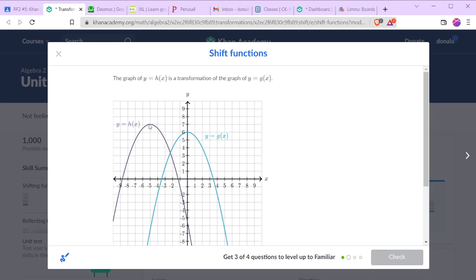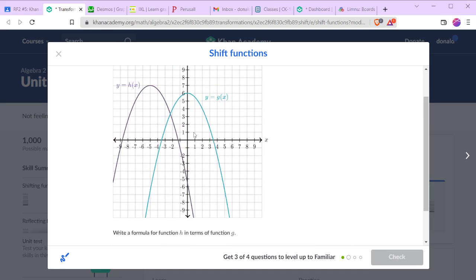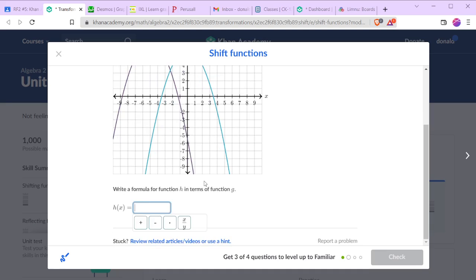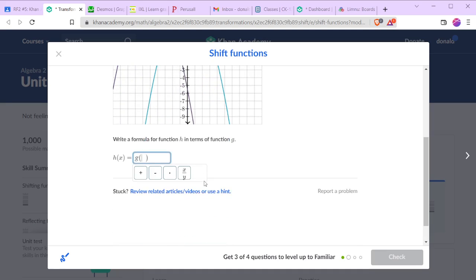So h is the transformation of g. So h has been shifted one, two, three, four, five units left and one unit up. So in terms of function g, we have this for five units left. And then we add one to go one unit up.